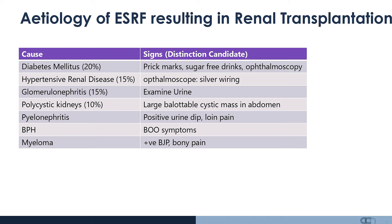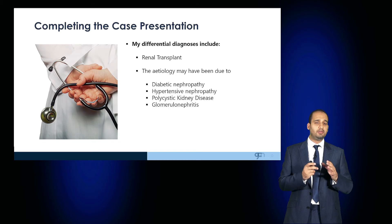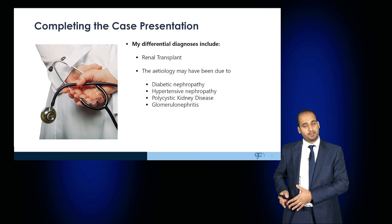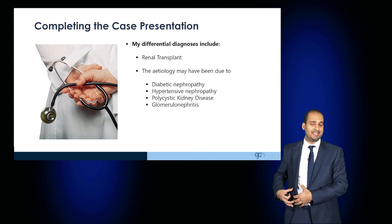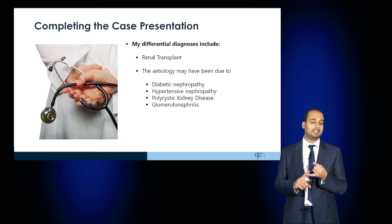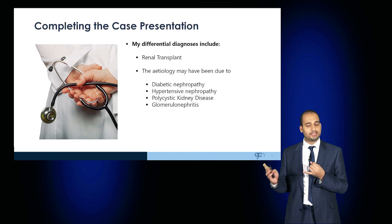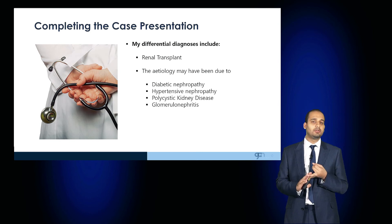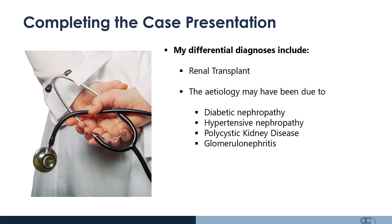Putting all of this together, not only are you picking up the Rutherford-Morrison scar and the mass underneath, but you're examining for the etiology of the end-stage renal failure and presenting that to the examiner. You're also looking for complications of immunosuppression. You then offer your differentials — you'd expect that this patient has a renal transplant, and you'd comment that the etiology may be diabetic nephropathy, hypertensive nephropathy, or as a result of PKD or glomerulonephritis.